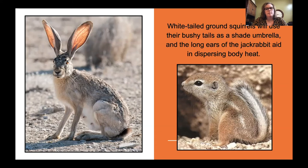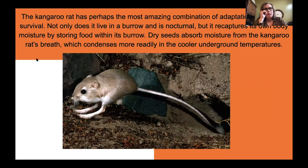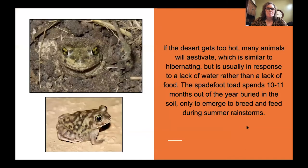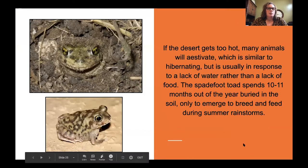The kangaroo rat has perhaps the most amazing combination of adaptations for desert survival. Not only does it live in a burrow and is nocturnal, but it recaptures its own body moisture by storing food within its burrow — dry seeds absorb moisture from the kangaroo rat's breath, which condenses more readily in the cooler underground temperatures. If the desert gets too hot, many animals will estivate — similar to hibernating but usually in response to the lack of water rather than food. The spadefoot toad spends 10 to 11 months of the year buried in the soil, only emerging to breed and feed during summer rainstorms.